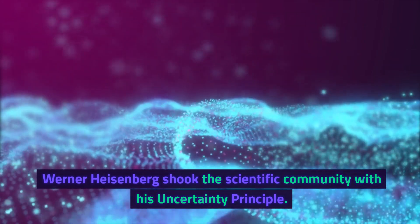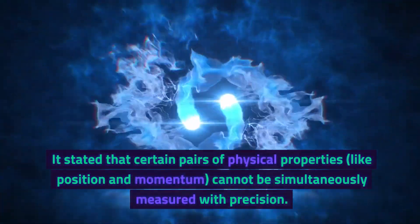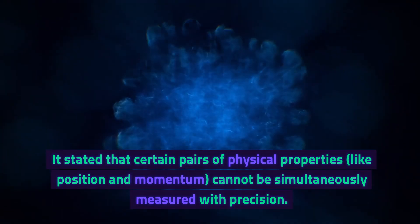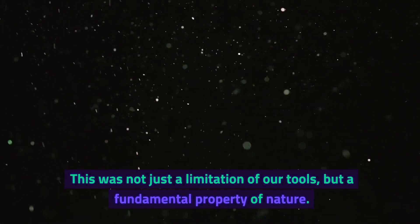Werner Heisenberg shook the scientific community with his uncertainty principle. It stated that certain pairs of physical properties, like position and momentum, cannot be simultaneously measured with precision. This was not just a limitation of our tools, but a fundamental property of nature.